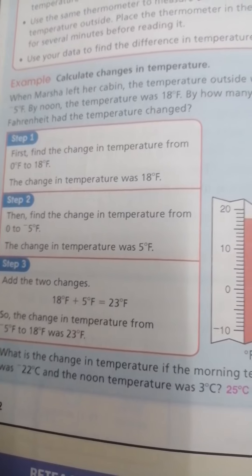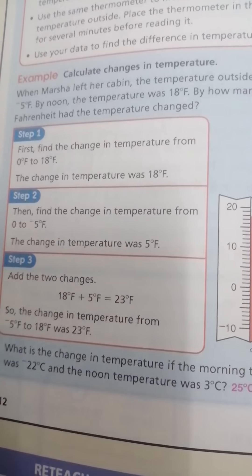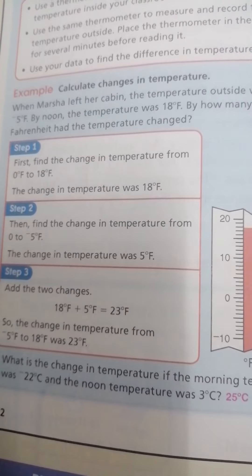Make 0 minus negative 5 equals 5. Okay. Look at here. Negative 5 to 18. Start from least to greatest. Make negative 5 plus 18.